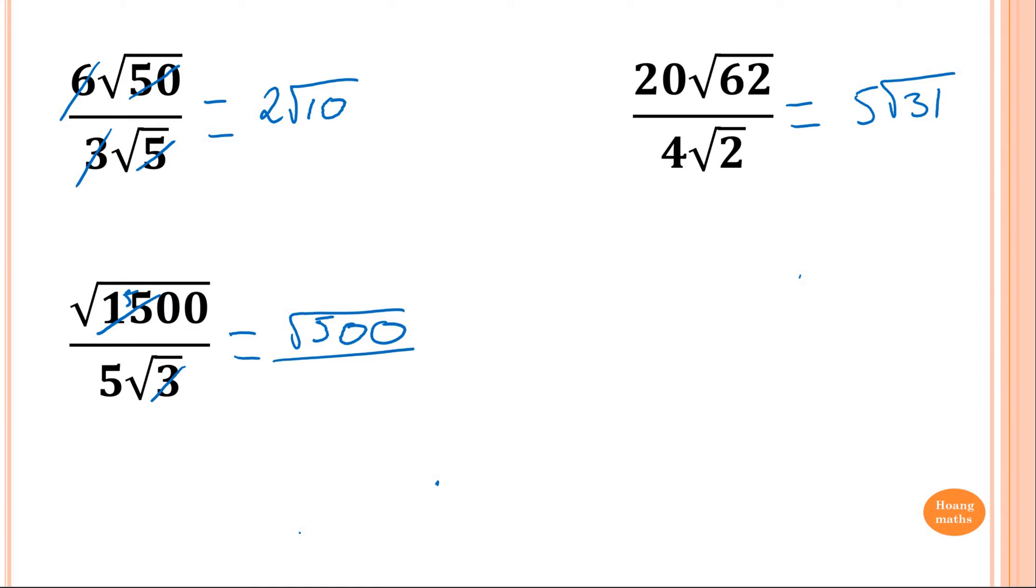Square root over 5. Now, square root of 500 divided by 5, but 500 cannot divide by 5 because 5 is a whole number and 500 is inside the square root. So I simplify 500 first. So 500 is, remember, 500 is 100 times 5.